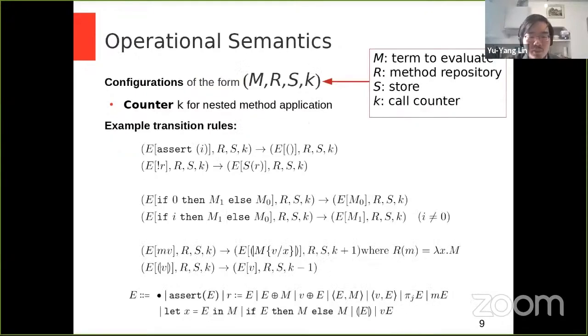So now we look at the operational semantics. Configurations in our semantics are made of a term that is going to evaluate. A method repository r, which is a map from names to lambda abstractions. A store s, which is another map that goes from references to values. And a call counter k, which is a natural number. This call counter counts the depth of call nesting. Since method application is the only source of infinite behavior, so infinite reductions, it suffices to bound the depth of calls to enforce termination.